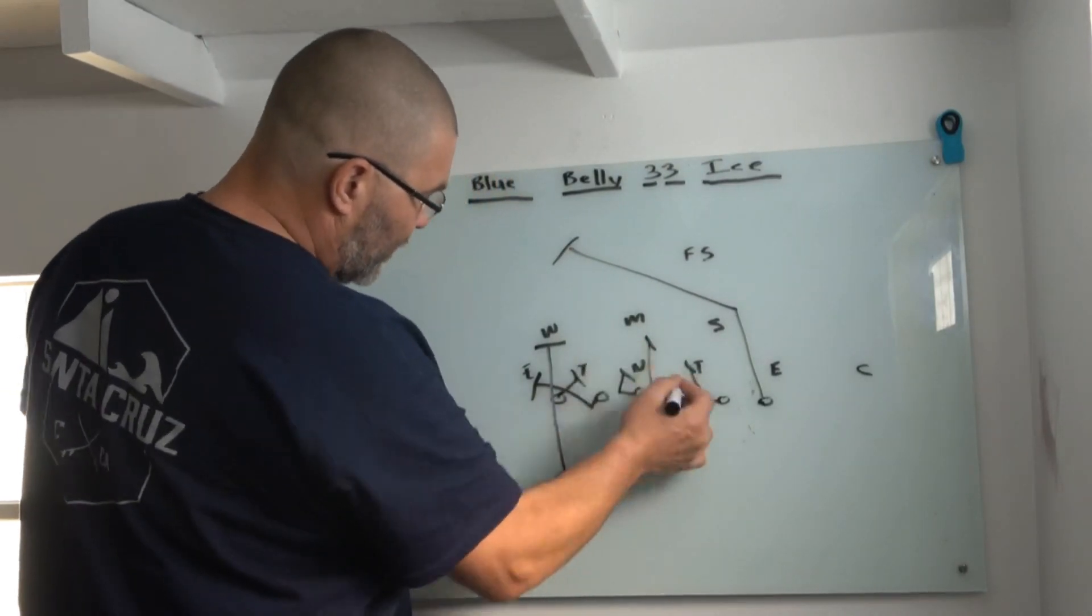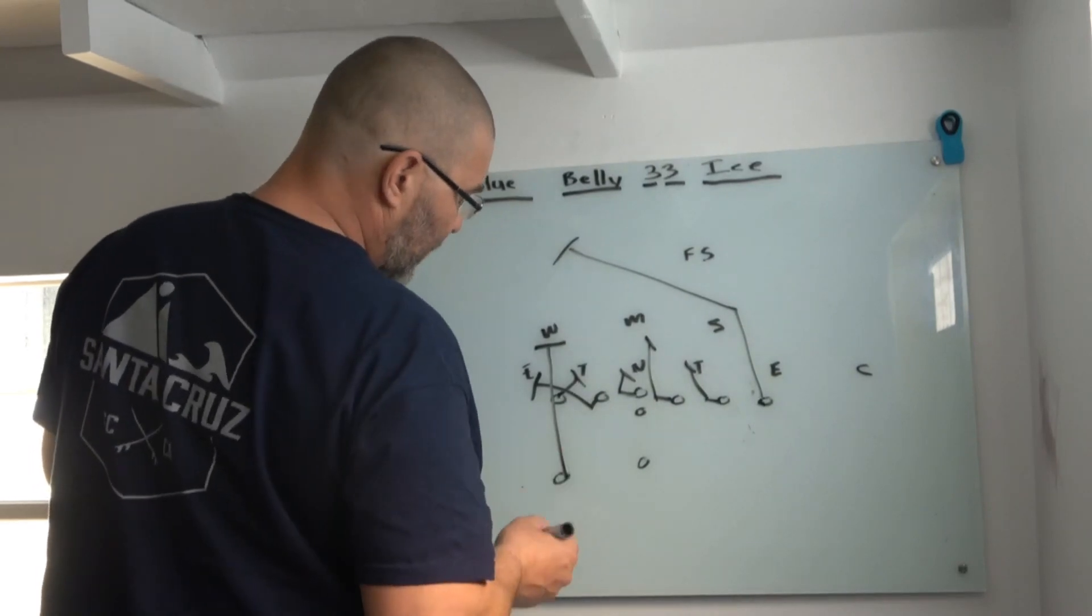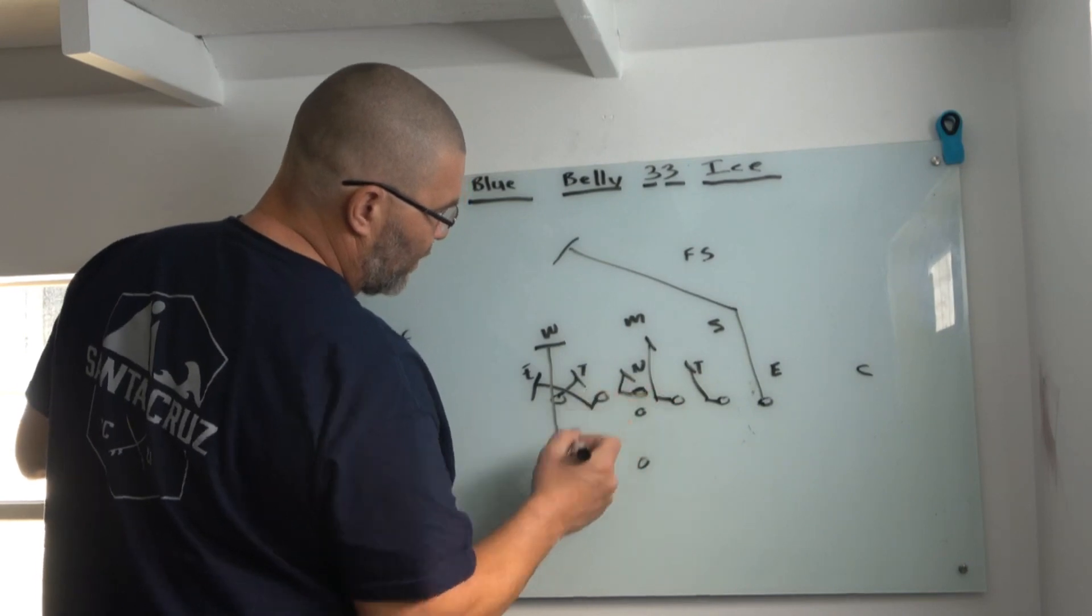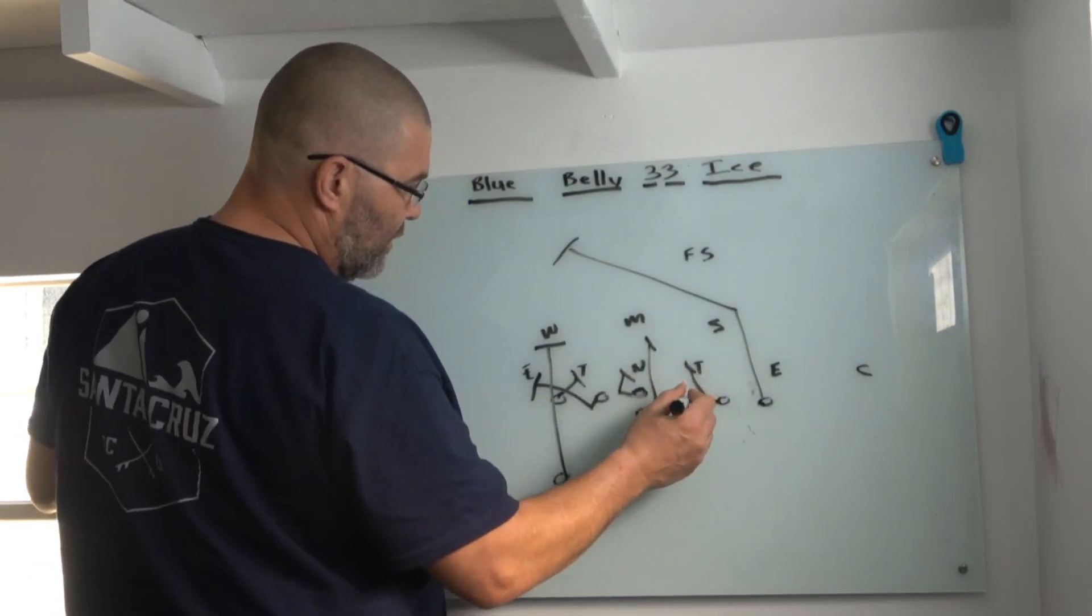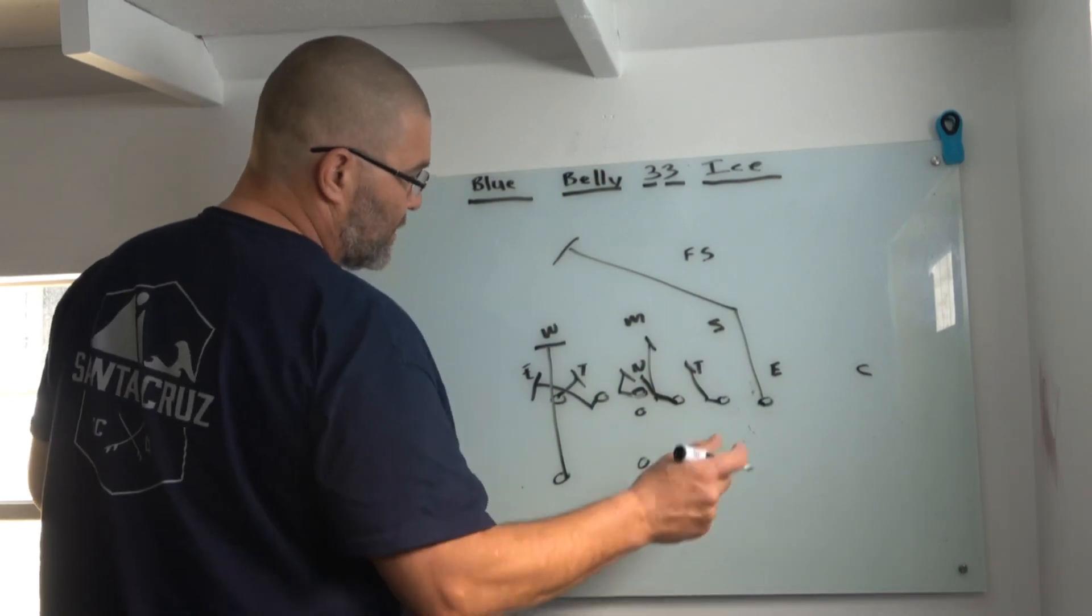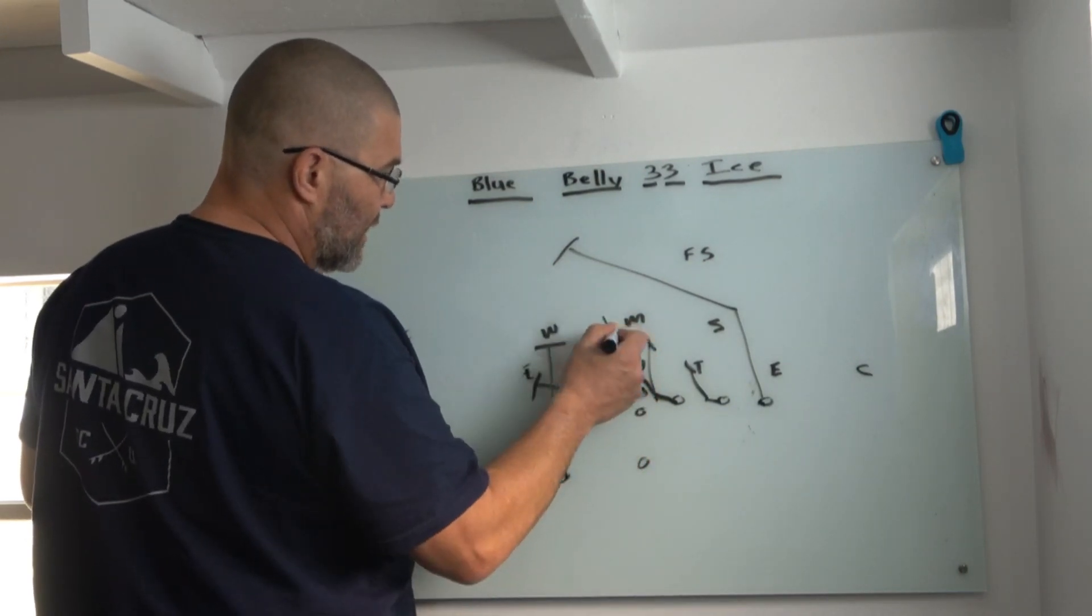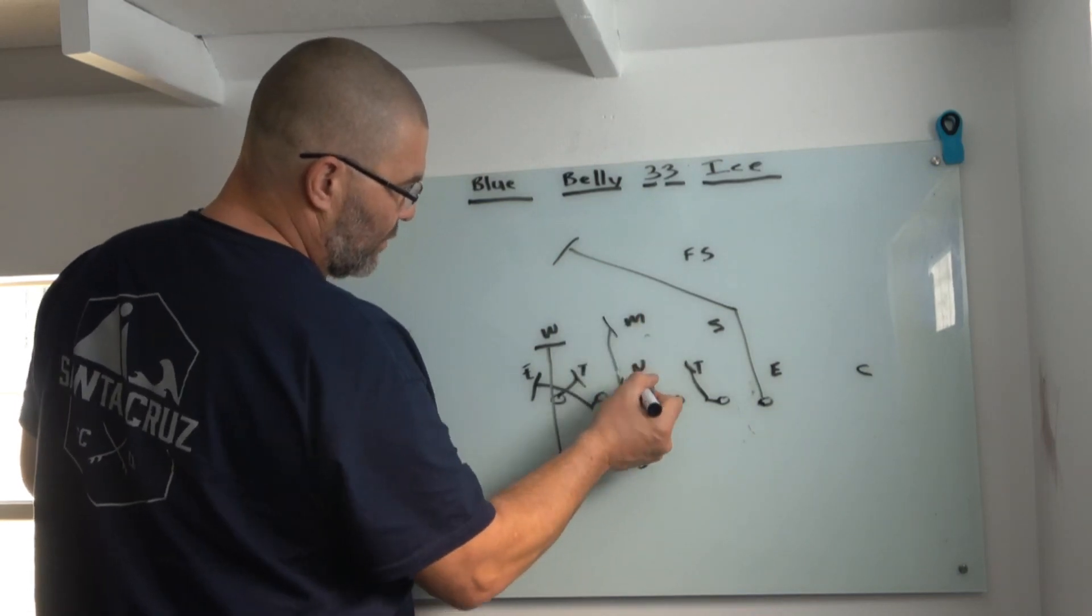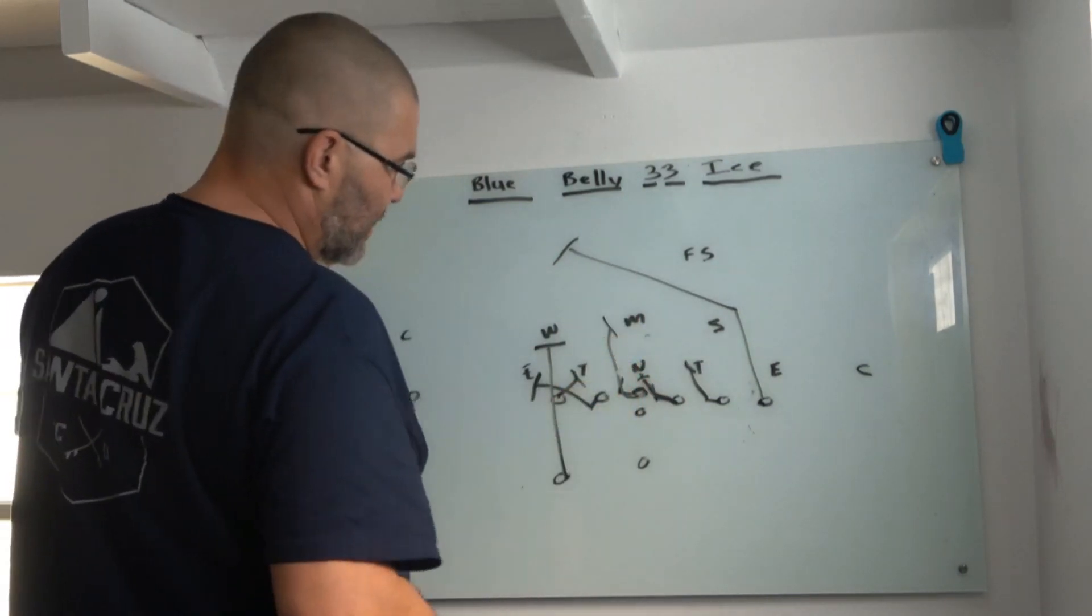If the guard can reach the nose here, great. Usually what I like to have my center do here is post on the nose, and then we're going to feel the double from the guard as he reaches and then we're going to slide to the mic. Just basic double team work here. Make sure that this guy doesn't penetrate.